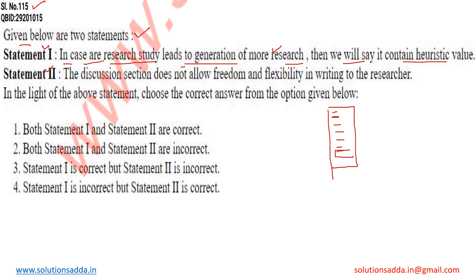In the conclusion part, a researcher who writes a research paper concludes their findings and outcomes, and also suggests what more can be done to improve existing techniques in the same domain. This leads to the generation of more research. So Statement one seems to be correct. Options two and four, where Statement one is false, can be directly eliminated.